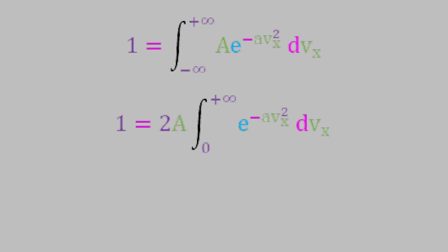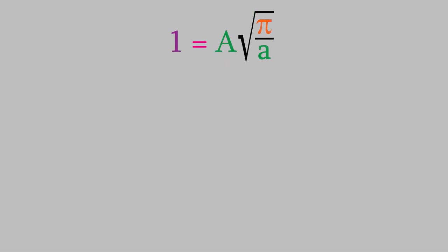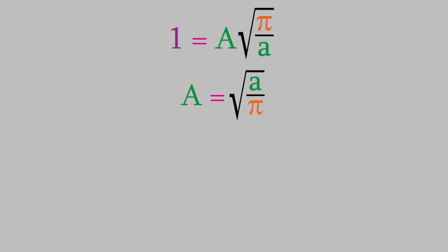It turns out that this definite integral has a known solution. If you check a good table of integrals, you'll find out that the solution to the integral is this. If we plug that into the equation, the 2's cancel, and we find that 1 is equal to capital A times the square root of pi over little a. If we solve this for capital A, we find that big A is equal to the square root of little a over pi. Now we can plug that back into our equation for the probability, which gives us this. The purpose of doing all that was to reduce the number of unknowns in our probability equation from 2, capital A and little a, to just 1. Now we just need to find out what little a is equal to, and we'll have an equation for the velocity distribution.